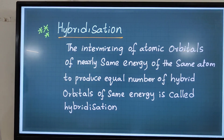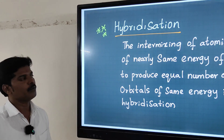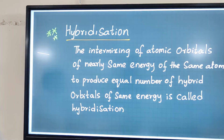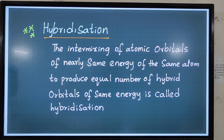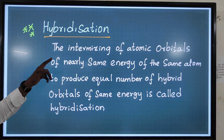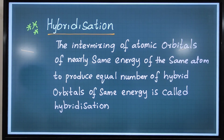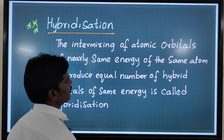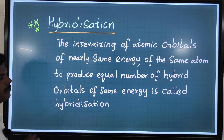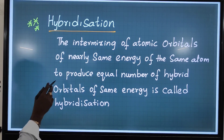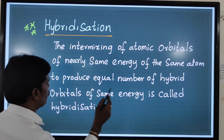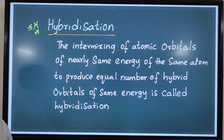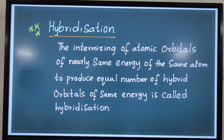Dear students, today I am going to explain hybridization. The intermixing of atomic orbitals of nearly the same energy of the same atom to produce an equal number of hybrid orbitals of the same energy is called hybridization.